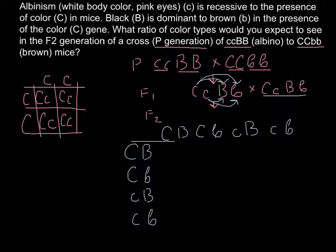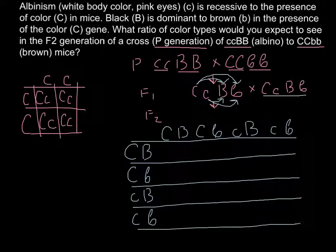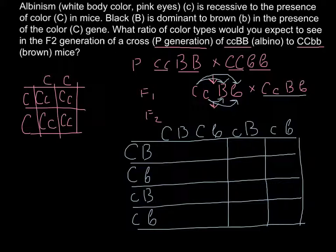Now we build a Punnett square once again. We will have 16 cells. When we cross these two parents of the same genotype, the four gamete types produce 16 combinations of genotypes. Let's now see what those genotypes are and what phenotypes they produce.